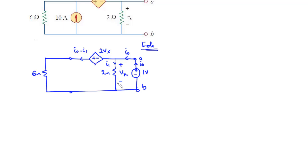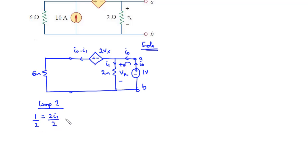Considering loop 1, we want to find the value of the current I1. We take the anti-clockwise direction and then we have the source voltage to be 1, and that is equal to the current in this branch I1 times 2, so that is 2I1. We divide through by 2 and then we have I1 to be equal to 0.5 amperes.